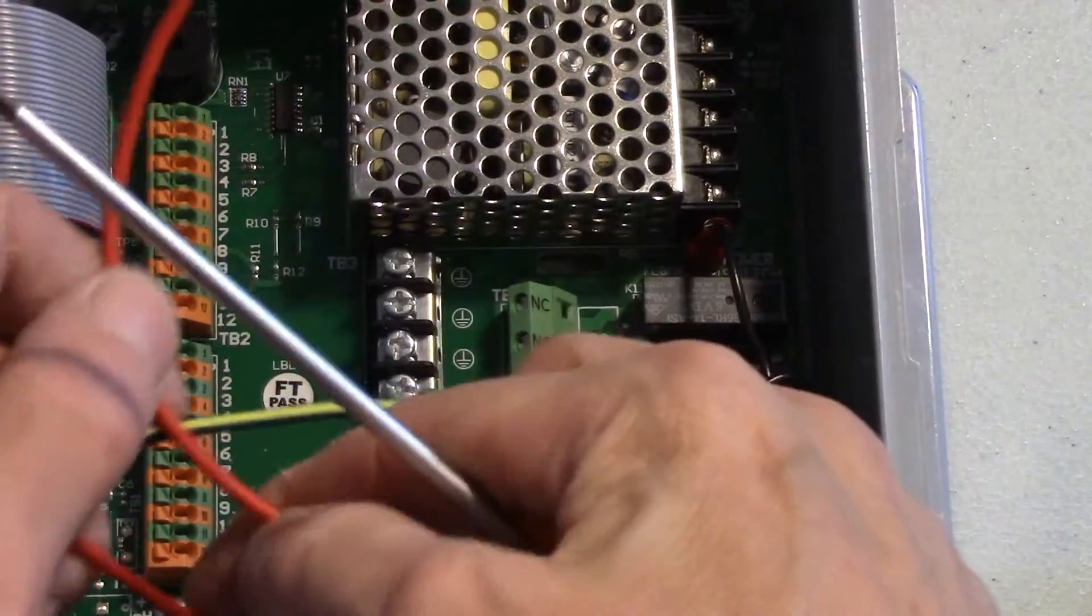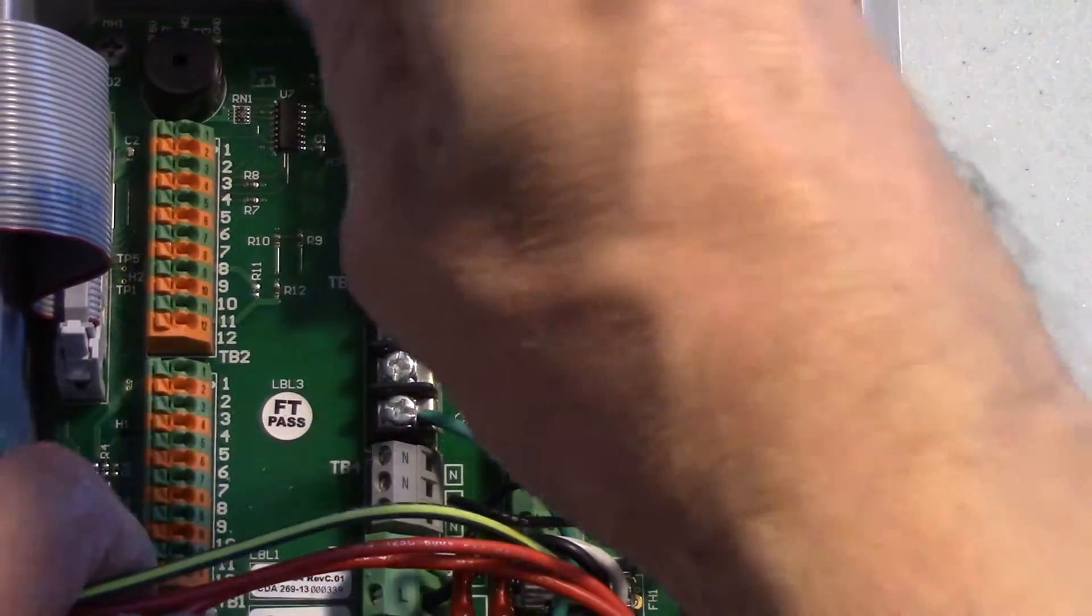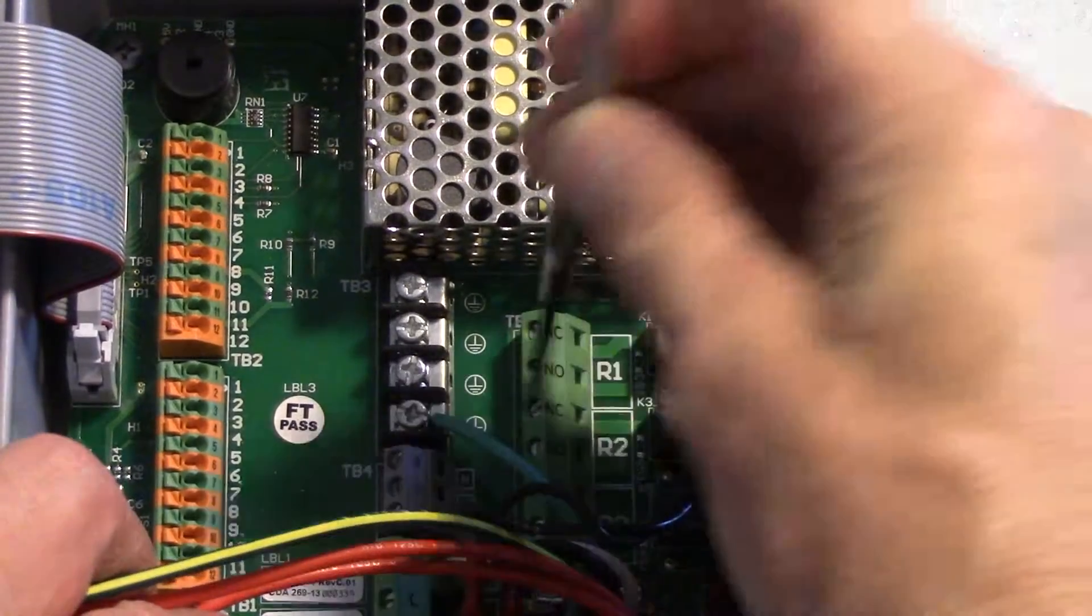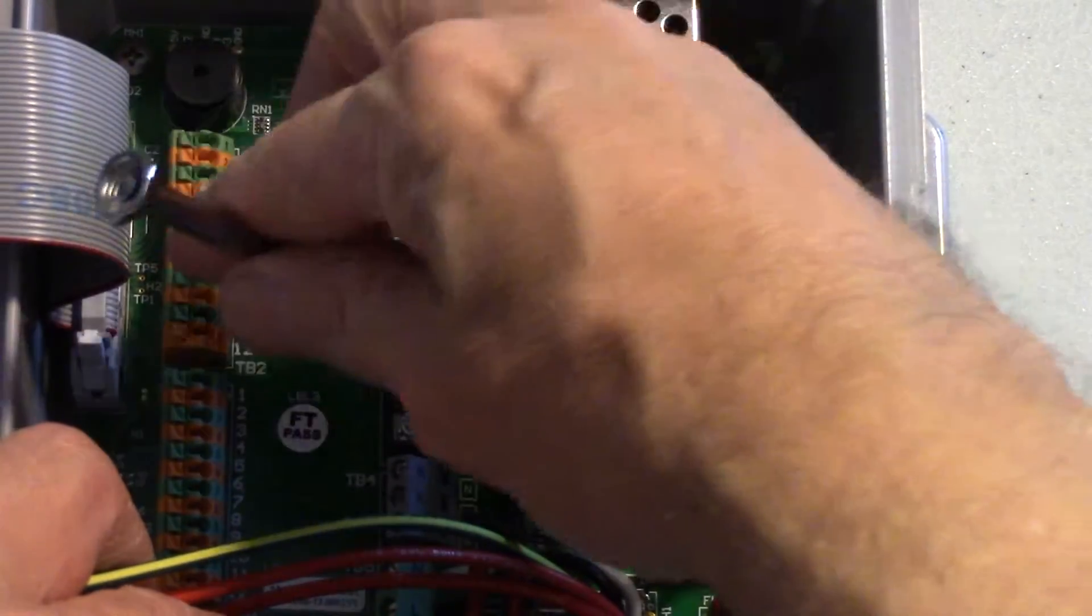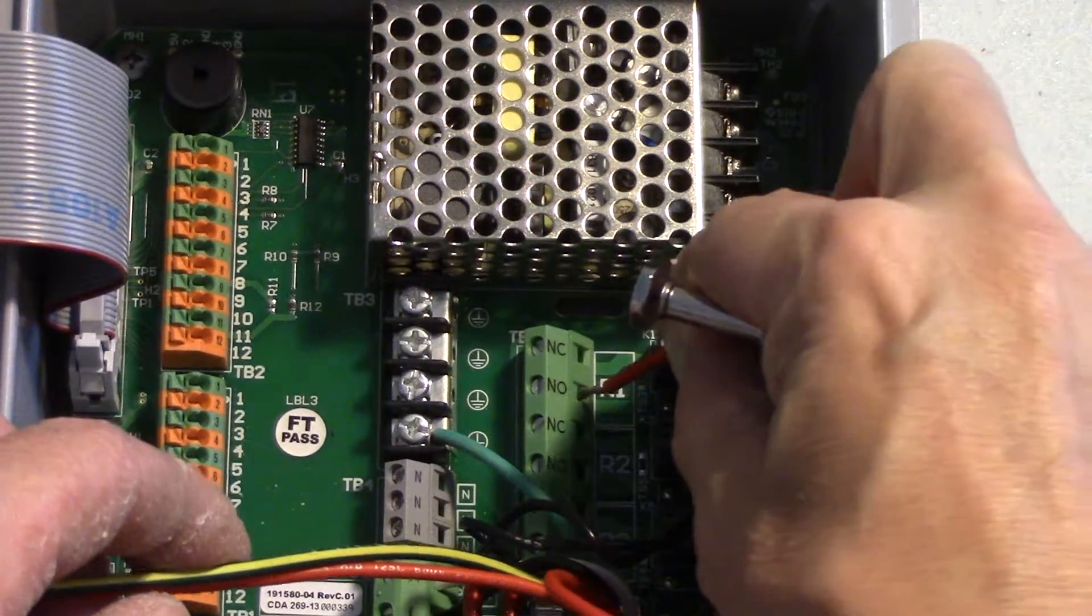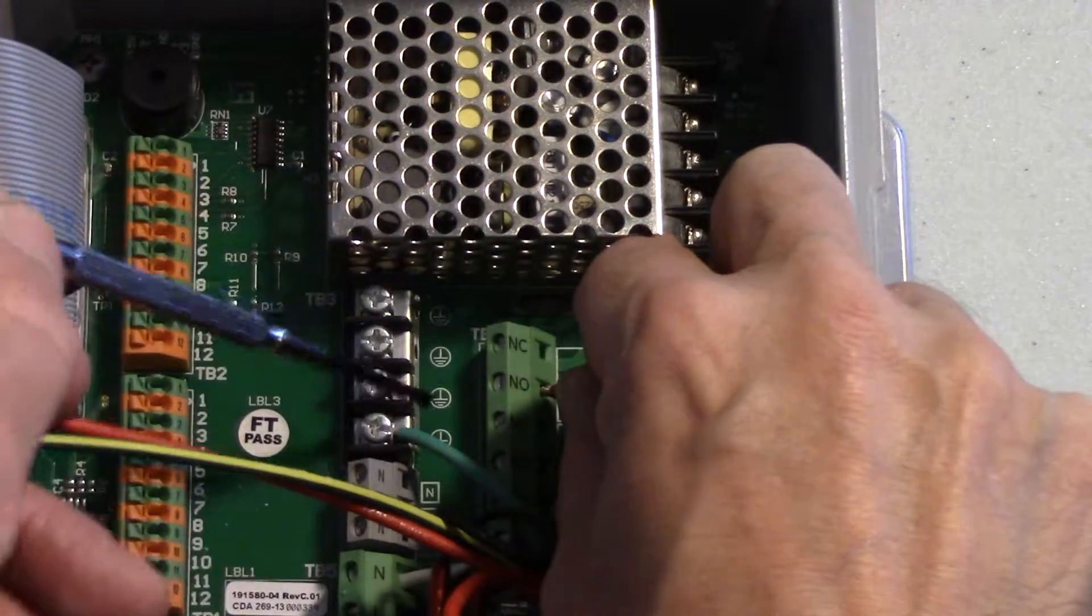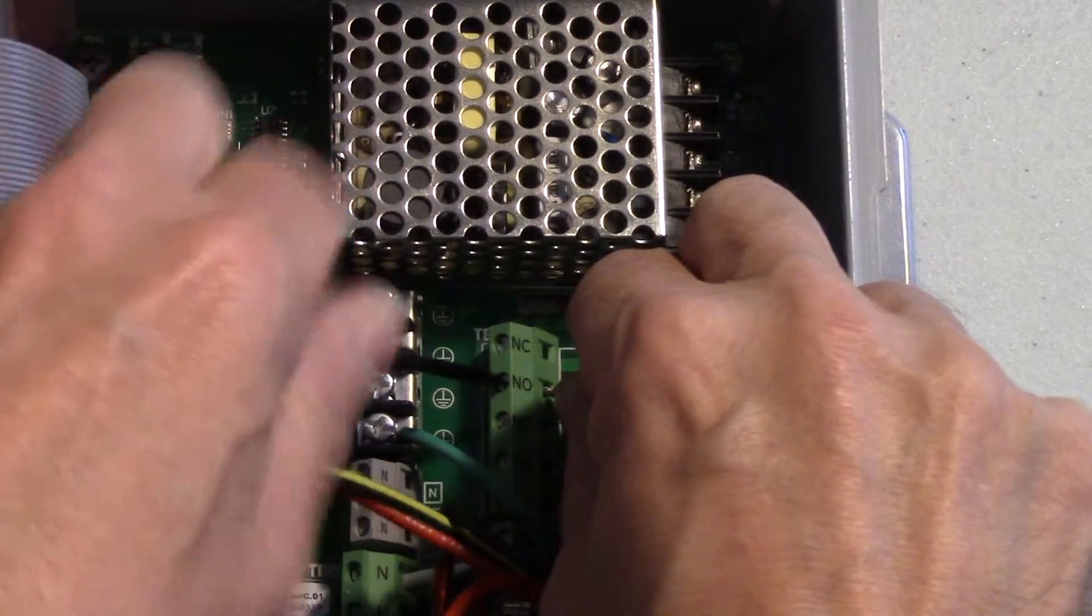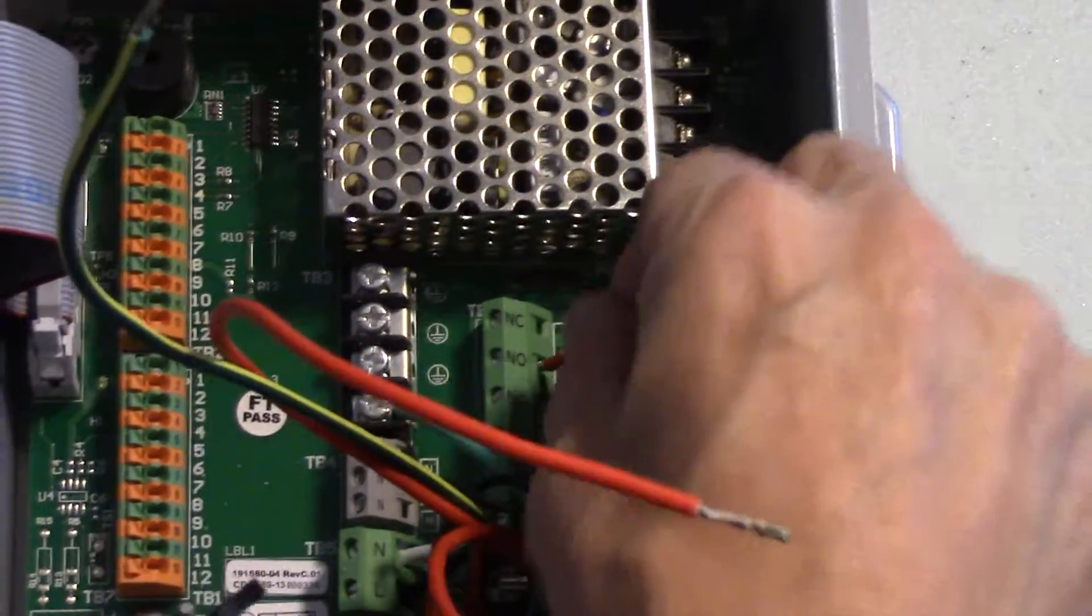So I'll put one of the red wires into relay one and you want to actually have a smaller screwdriver. Loosen it up and slide it in. Give it a good tug.